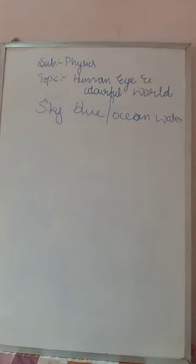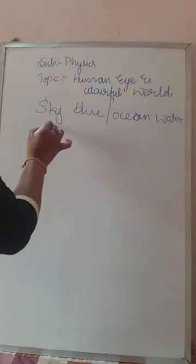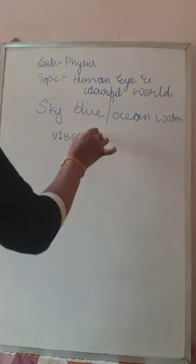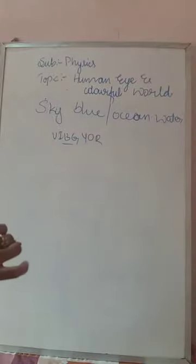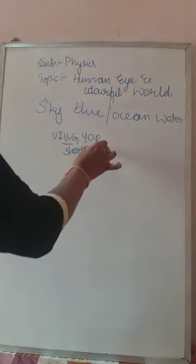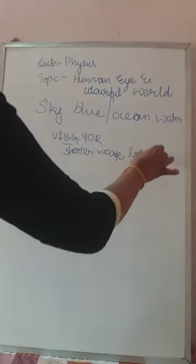The sky is always blue and the ocean water is also blue. Why? When the sunlight passes through the atmosphere, the blue color has a shorter wavelength in the visible spectrum. This blue color has a shorter wavelength compared to other colors.